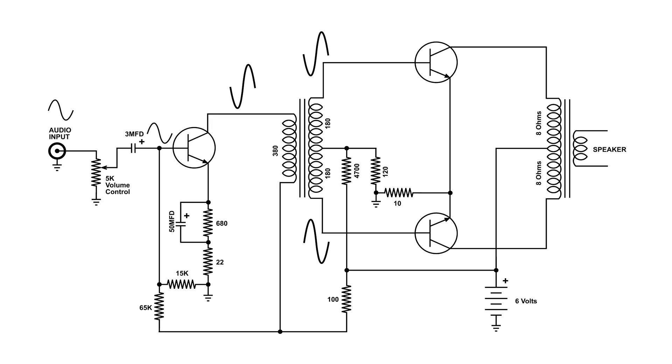Those transistors then amplify the signal again. But notice, again, the phase has changed from what's on the base to the signal at the collector.